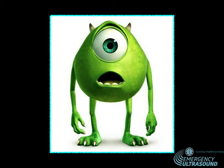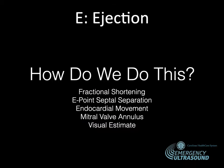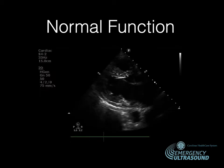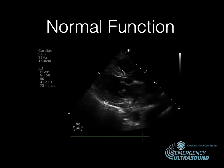We're going to use the eyeball method. With a critical eye, we identify the left ventricle and look at different aspects of how it moves. We're not looking for an exact ejection fraction of 65% or 18% — we're looking for hyperdynamic, normal, moderate, or poor function. To do this, we look for fractional shortening, E-point septal separation, endocardial movement, and movement of the mitral valve annulus to give us our overall visual estimate.